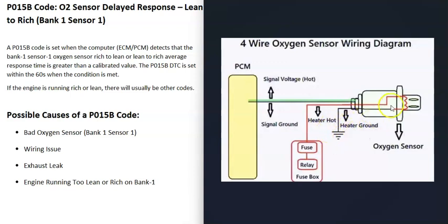Four-wire sensors are fairly common and have a heater element built in. O2 sensors can't get accurate readings until they heat up, so the heater element helps them heat quickly without waiting for the engine and exhaust to warm up. These heater elements typically have 12 volts going to them, are protected by a fuse and relay, and the remaining two wires — a ground and a signal wire — go back to the computer.